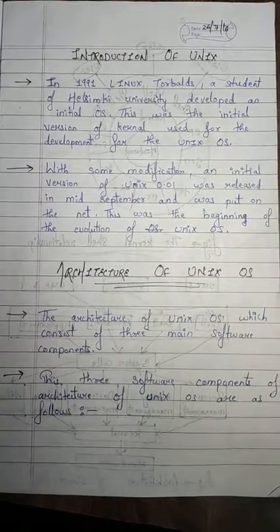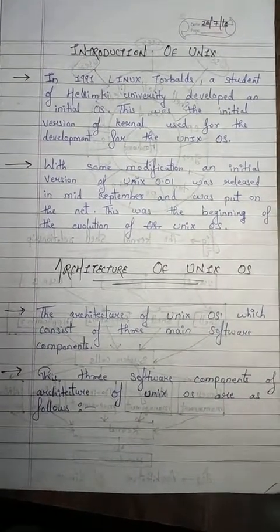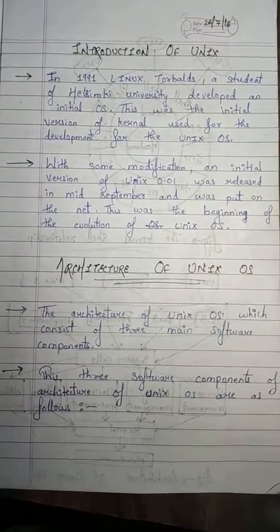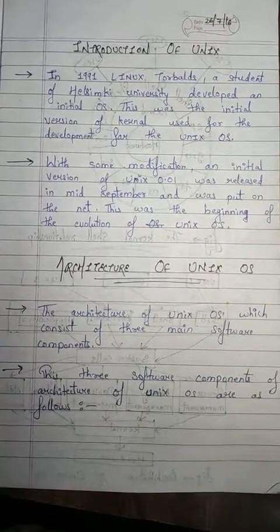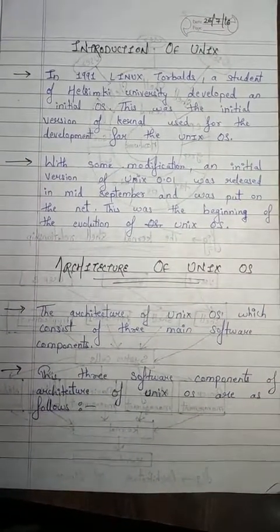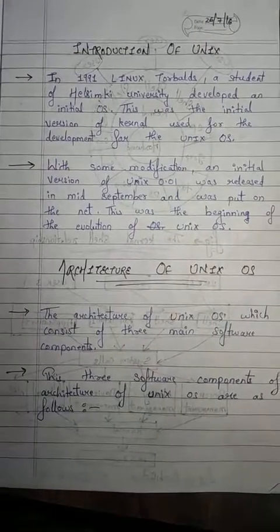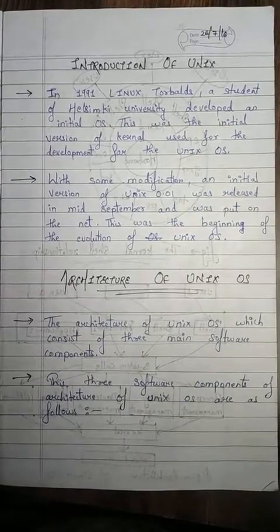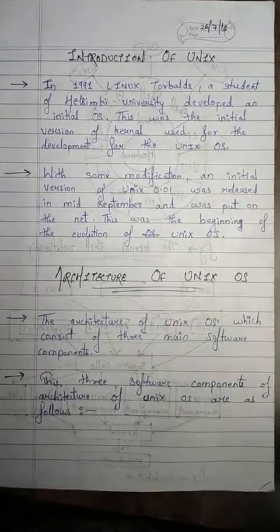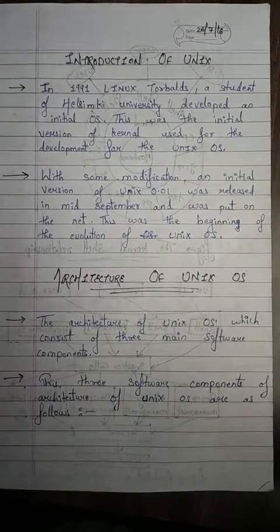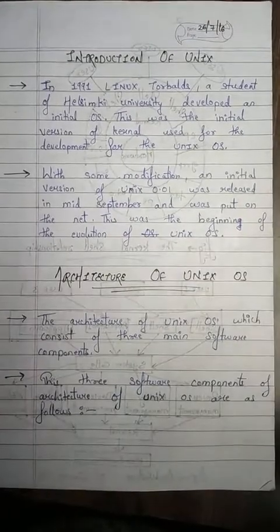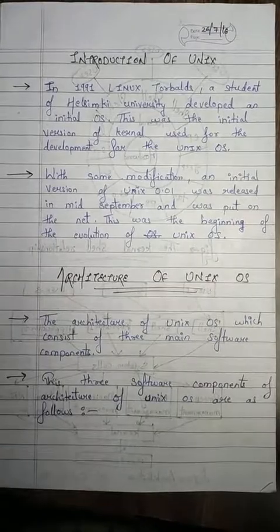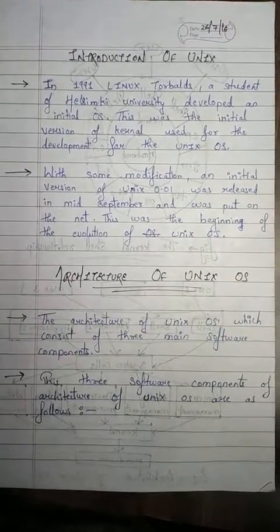With some modifications, an initial version of Unix 0.1 was released in mid-September and was put on the net. This was the beginning of the evolution of the Unix OS. Our Unix operating system begins here.